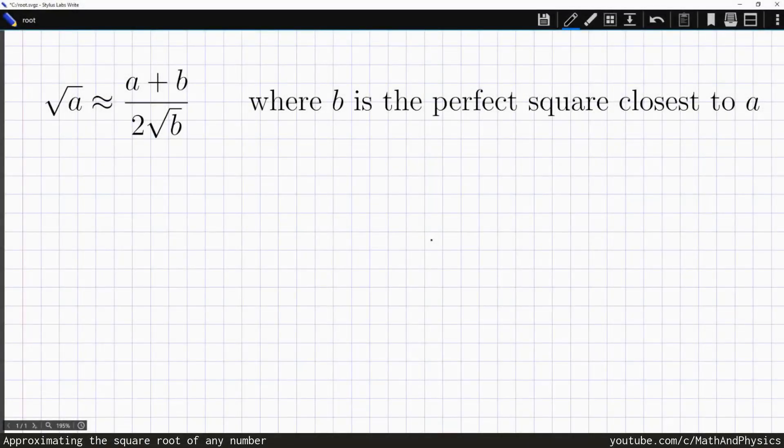I recently stumbled upon this trick for approximating the square root of any number a by computing this fraction, including the number b, which is the perfect square closest to a. This calculation is so simple that it can be done in your head most of the time, but it gives a surprisingly good approximation.